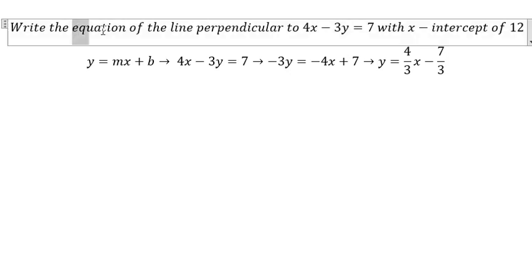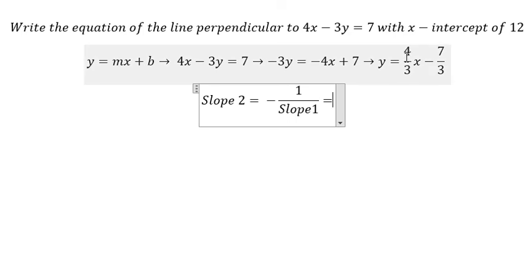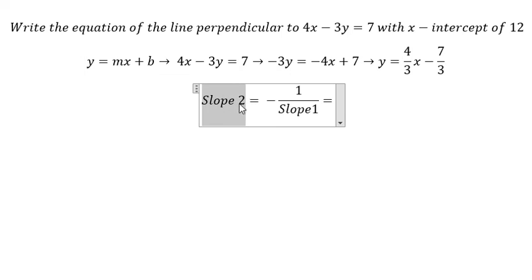We know that this equation is perpendicular to this one. The formula shows that slope 2 should be -1 over slope 1. So the slope of this equation is 4/3, and we need to find slope 2.